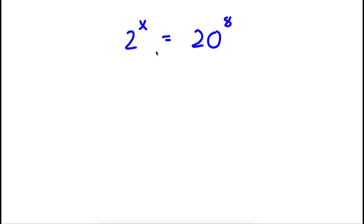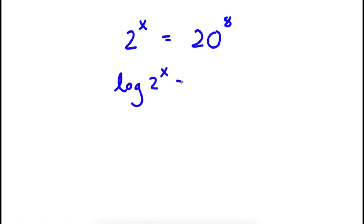So I have 2 to the power of x is equal to 20 to the power of 8. Now the first thing I'm going to do is I'm going to take the log on both sides. So now I have log 2 to the power of x is equal to log 20 to the power of 8.